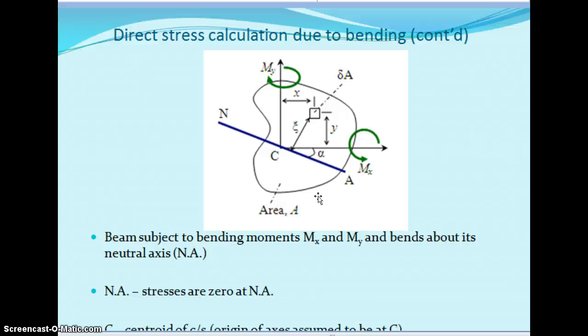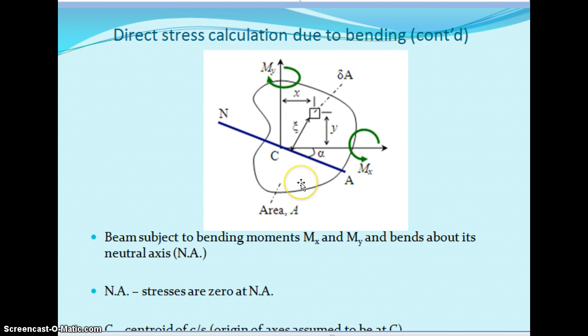If you want to find out the bending stress in the z direction, we have Mx and My — Mx is the bending moment about the x direction, My is the bending moment about the y direction — and with respect to these two we find the bending stress. We also need to find the cross-sectional properties: Ixx, Iyy, and Ixy. Ixx is the moment of inertia about the xx axis, Iyy about the yy axis, and Ixy is the moment of inertia about the xy plane. Ixx equals the integral of y²dA, Iyy equals the integral of x²dA, and Ixy equals the integral of xydA.